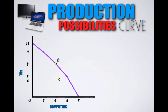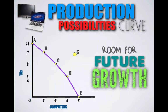A production possibility combination outside of the production possibilities curve, like Point G, represents room for future growth. This is a combination of TVs and computers that Country B currently cannot achieve given their resources, but they would like to achieve at some point in the future. Country B is either going to have to become more productive with what they have, or gain more resources in order to reach Production Possibility G.